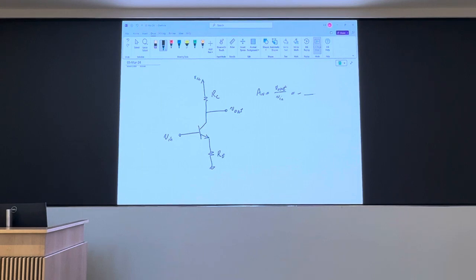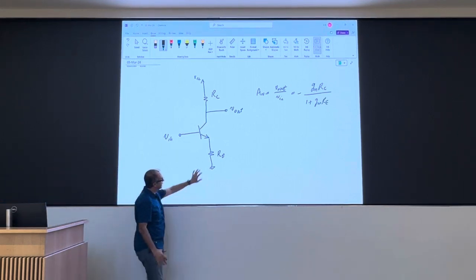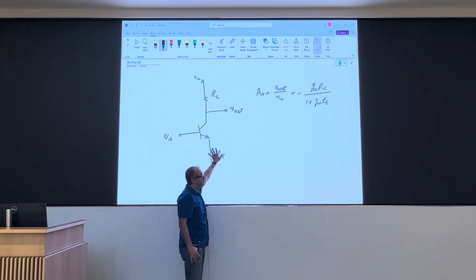And the magnitude is gm*RC over 1 plus gm*RE. So, if you go and look at the most basic amplifier, which doesn't have this RE, is that RE 0 over there, you get the gain of gm*RC.